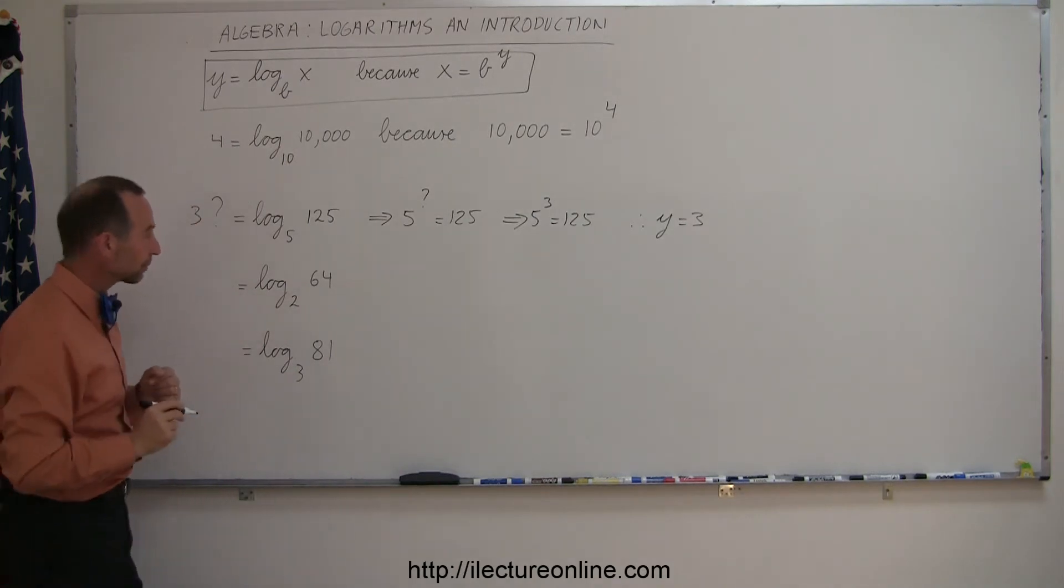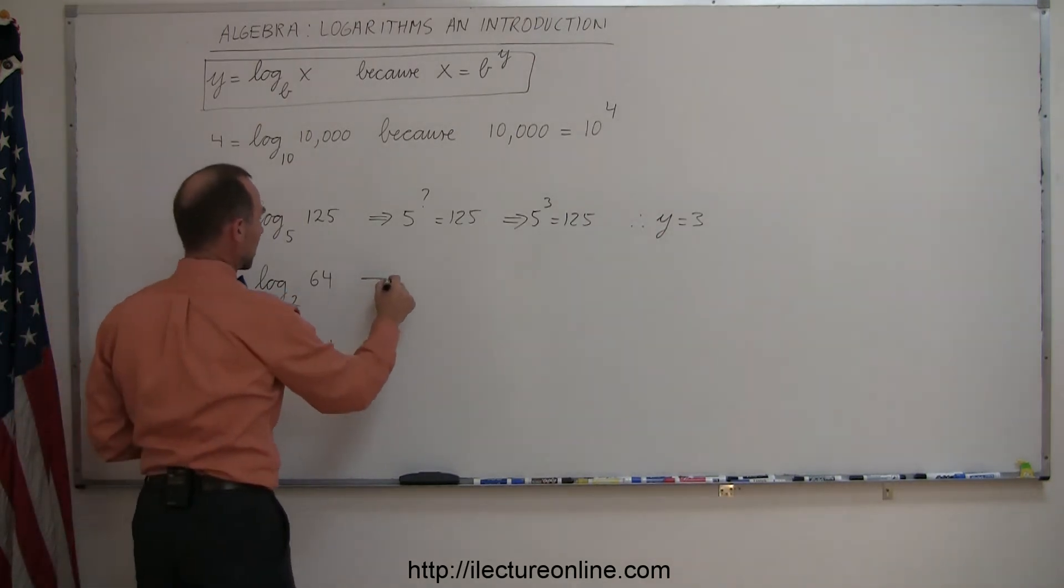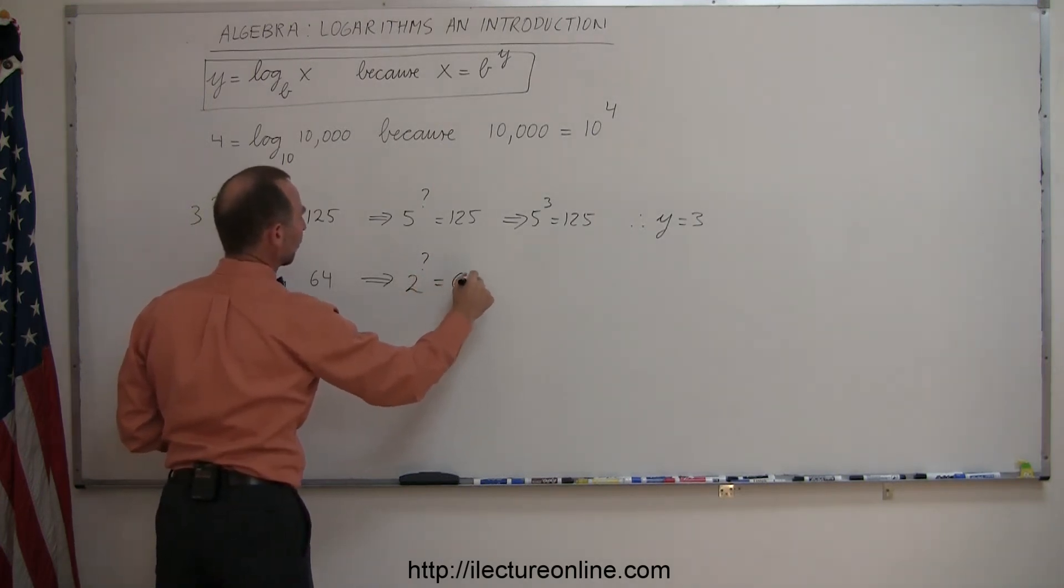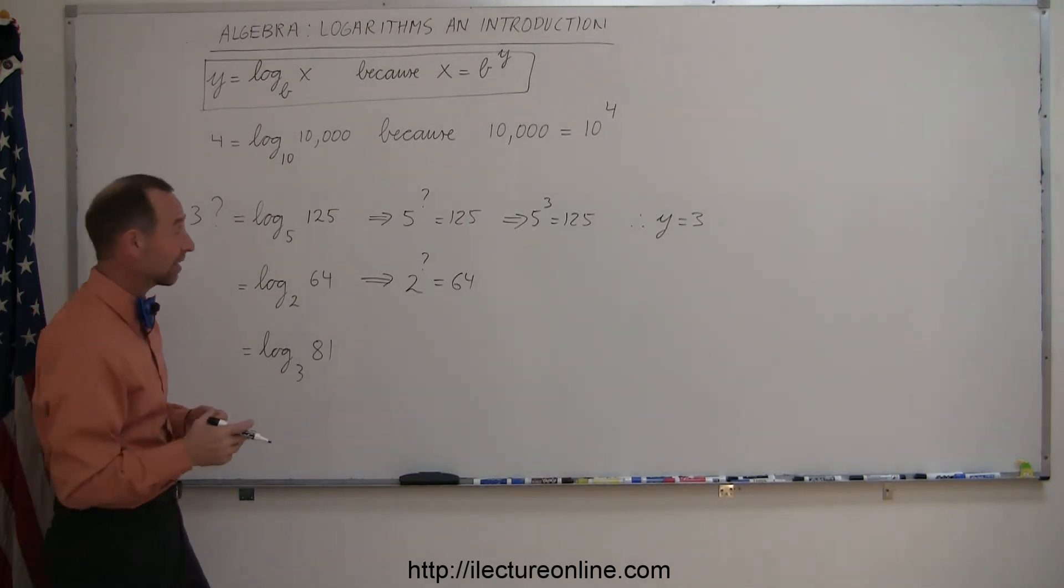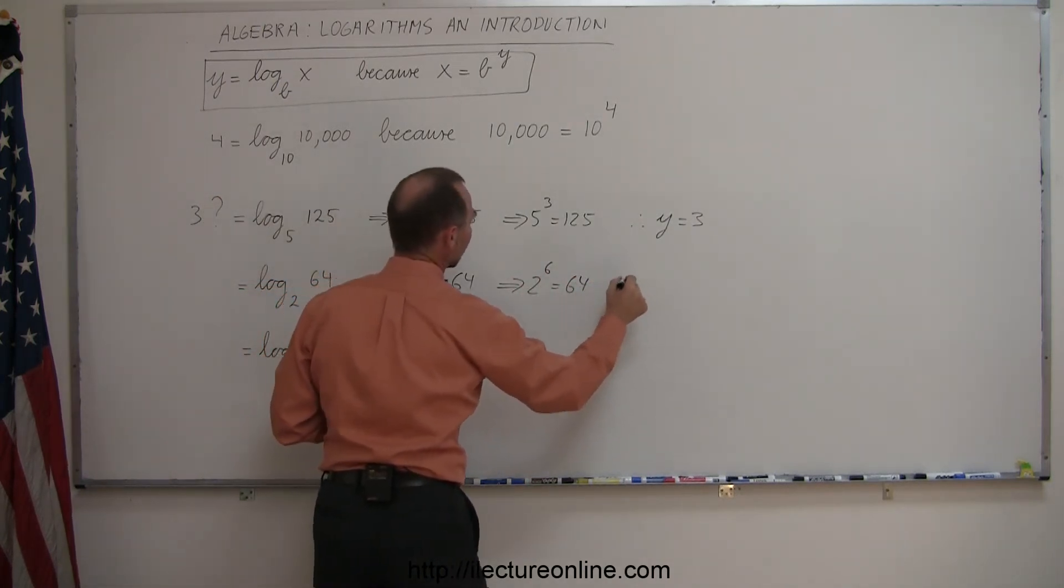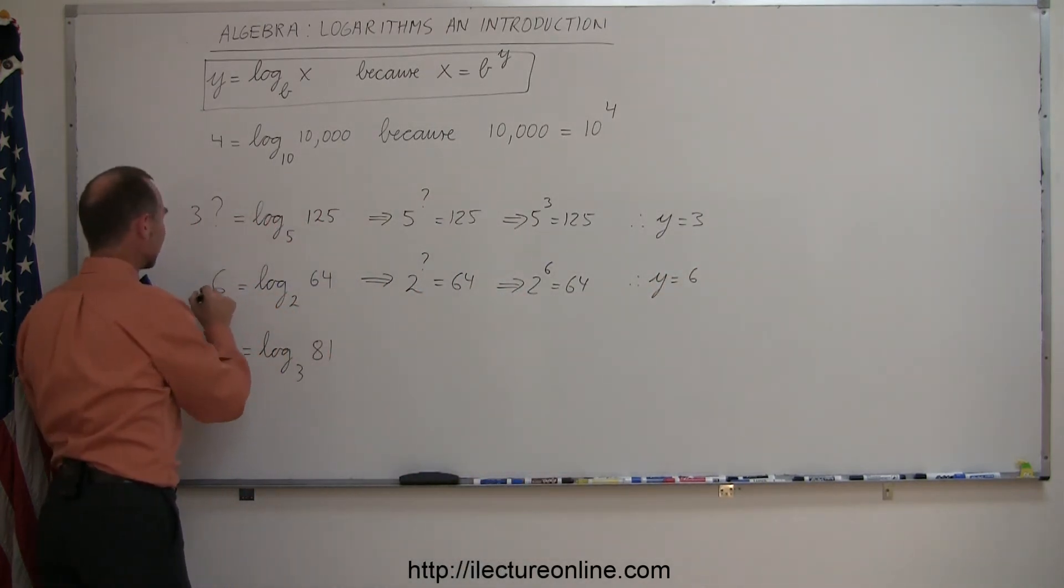Same thing over here. We use the base 2, raise it to some power, and we get 64. So we take the base 2 and raise it to some power to get 64. What exponent do we need? So we know that 2^2 = 4, 2^3 = 8, 2^4 = 16, 2^5 = 32, and 2^6 = 64. So that means 2 to the 6th power equals 64. Therefore, in this case, y is equal to 6.